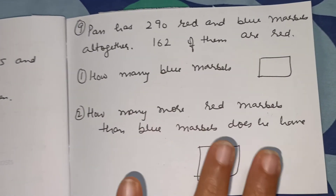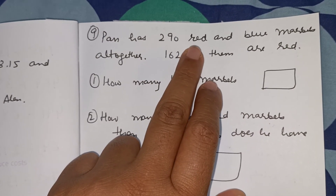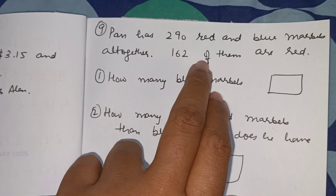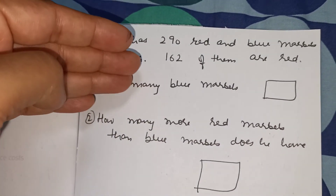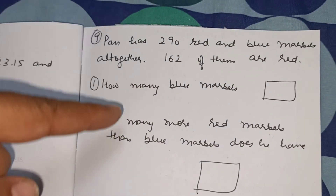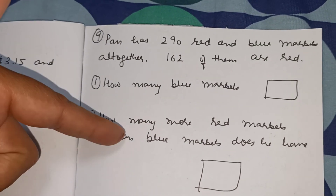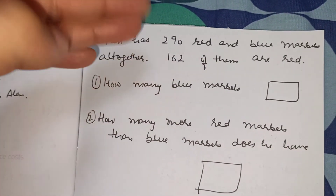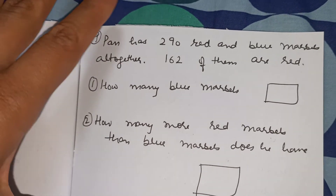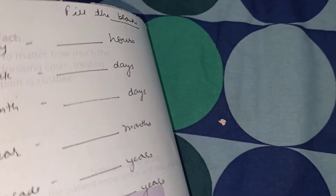This is very simple for her. Pam has 290 red and blue marbles; 162 of them are red — how many are blue? So 290 minus 162. And then: how many more red marbles than blue marbles does she have? Whatever number she gets, she'll subtract from that one. So just practicing addition and subtraction alongside the more complicated stuff.